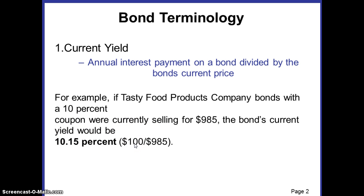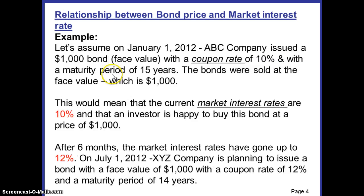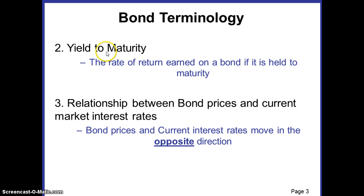To sum up, we calculate the current yield on a bond by dividing the coupon interest on the bond by the current selling price of the bond. The next important terminology is yield to maturity. Yield to maturity is the rate of return earned on a bond if the bond is held to maturity. This means that if an investor buys a bond with a maturity period of 10 years and holds it for the full 10 years without selling it to anybody else...